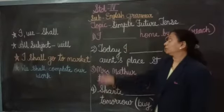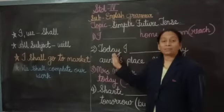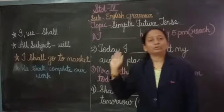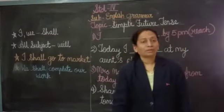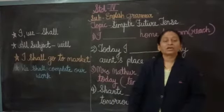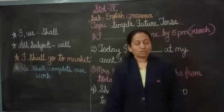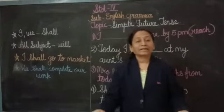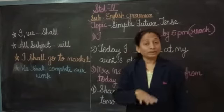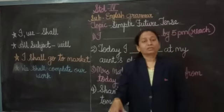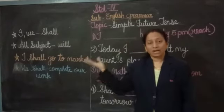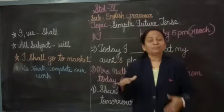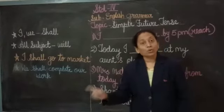Hello students. Today we are going to learn from your grammar textbook — Simple Future Tense. Now you have learnt all the present tense. Present tense means the things which are going on now. Suppose I say that I am teaching you the grammar lesson — that means it is going on now. Or if I say the birds are flying in the sky — the situation is going on right now.